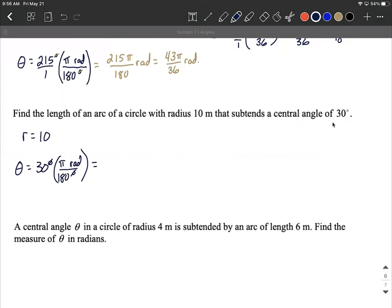Degrees cancel and we get 30π over 180 radians, which reduces to π over 6 radians. So s can be computed as r times theta: 10 times π over 6, which works out to 10π over 6 or 5π over 3 for an exact answer for the arc length.